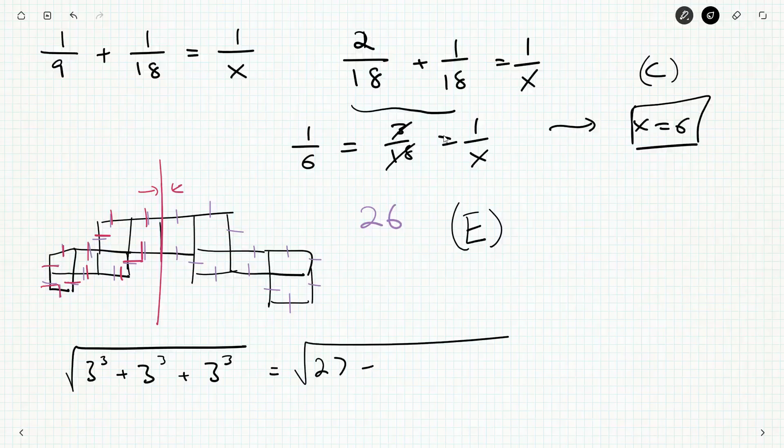You could just say, well, three cubed is 27 and then another 27 and another 27. Add those up and say, oh, square root of 81 and square root it or know that the square root of 81 is nine, and we're done. That's a fine way to do it.